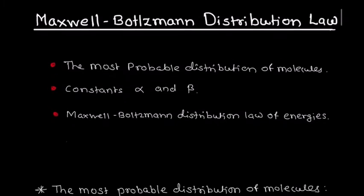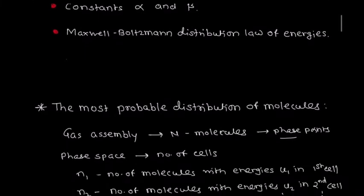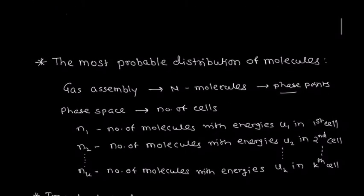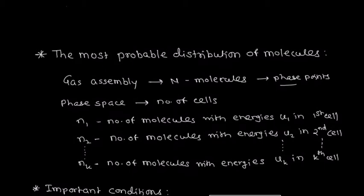First, find the most probable distribution of molecules and their relation. For that purpose we consider a given gas assembly that consists of a very large number of molecules. All these gas molecules are identical and distinguishable and they have any speed. Such molecules obey Maxwell-Boltzmann statistics, hence these N molecules will satisfy all those characteristics.